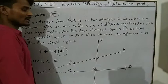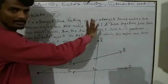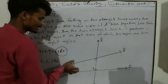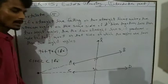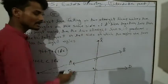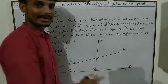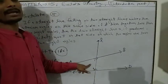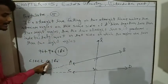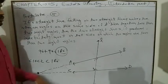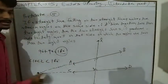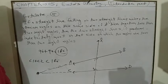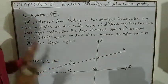So if a line is falling on two straight lines — let's say there is a line L falling on two straight lines — and the left side of the interior angles, angle 1 and angle 2, have a sum less than 180 degrees, then if we produce these two lines indefinitely, somewhere the lines will meet. This is Postulate Number 5.